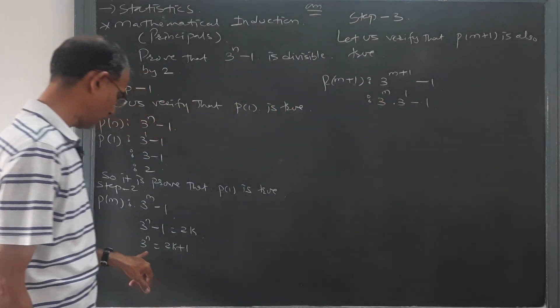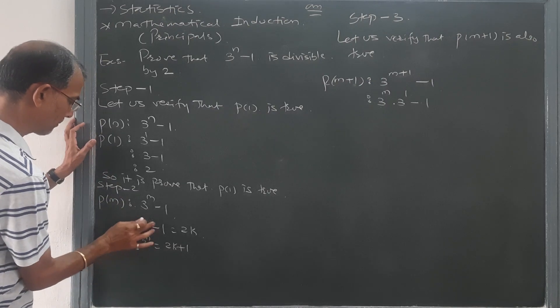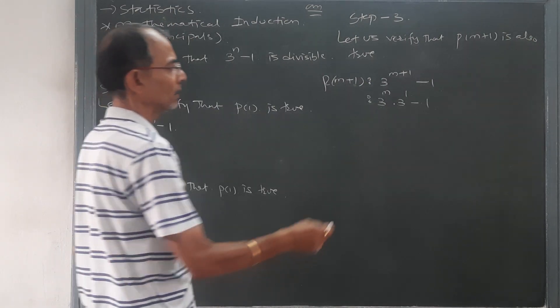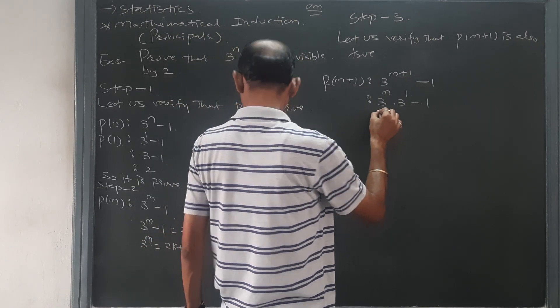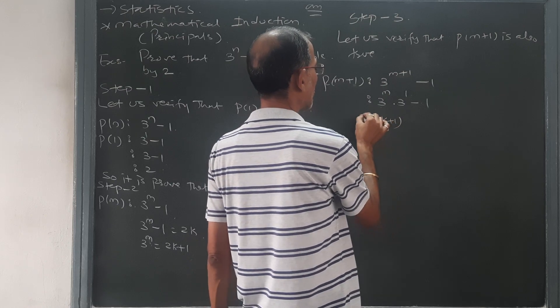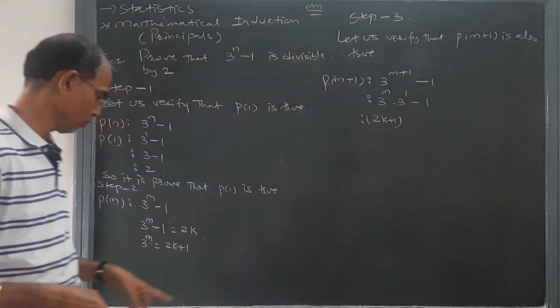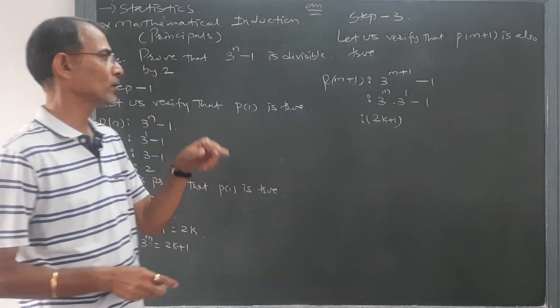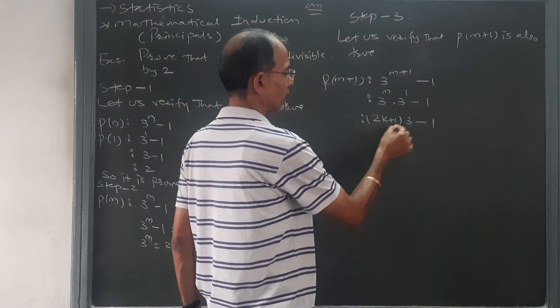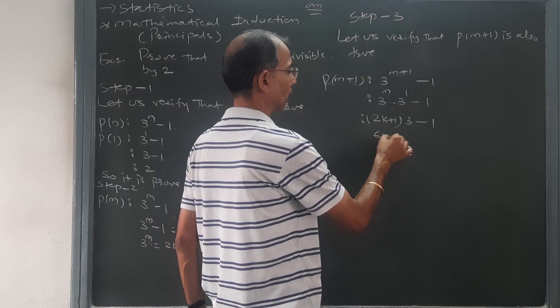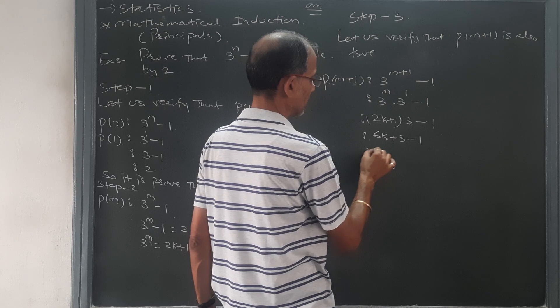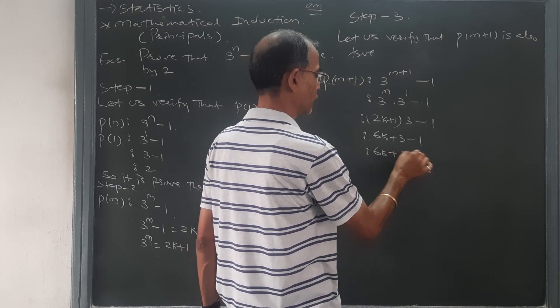3 raised to m is 2k plus 1. At the place of 3 raised to m, you have to put 2k plus 1 into 3 minus 1. This will become (2k plus 1) times 3 minus 1, which is 6k plus 3 minus 1. That means 6k plus 2.